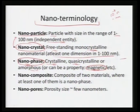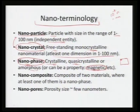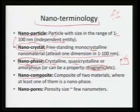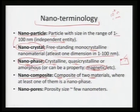Each material can have multiple phases, and if one of those phases has a unit size of 1 to 100 nanometers, we call it a nanophase — whether it is crystalline, quasi-crystalline, or amorphous. A nanocomposite is a composite of two or more materials where at least one of them is in a nanophase.